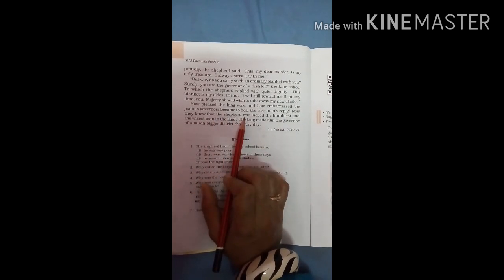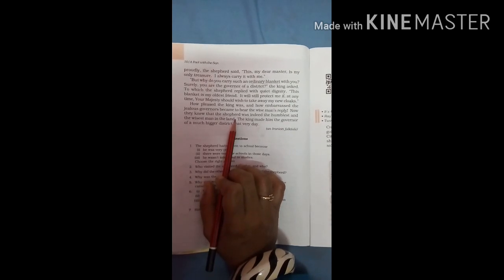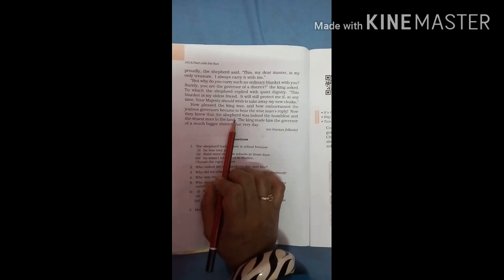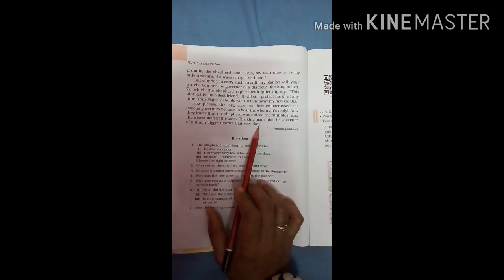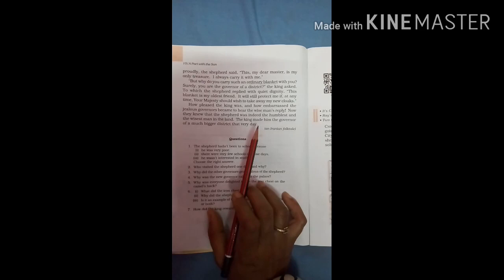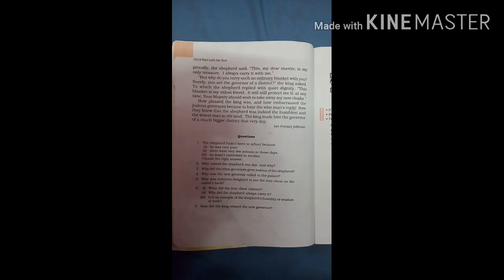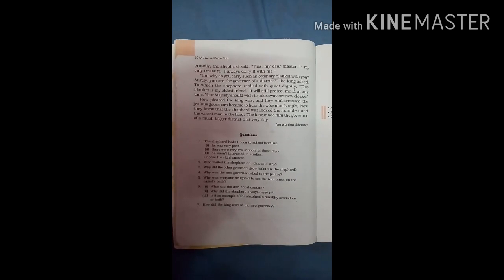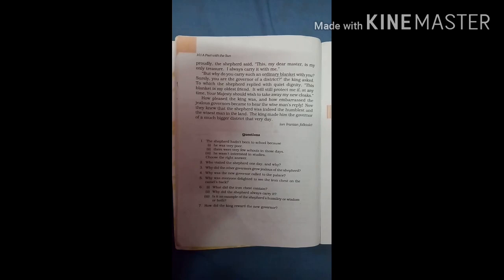Now they knew that the shepherd was indeed the humblest and the wisest man in the land. The king made him the governor of a much bigger district that very day. The king made the shepherd the governor of a large district because of his wisdom and honesty. So this is our story of chapter number 3 that one completed here. In the next video we will continue to our question answer of this chapter. So read this story.